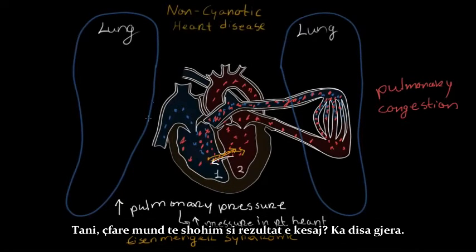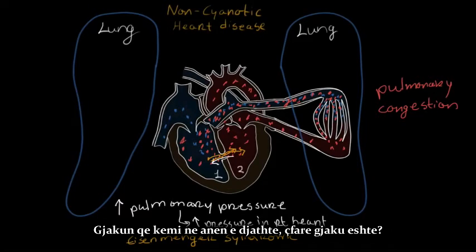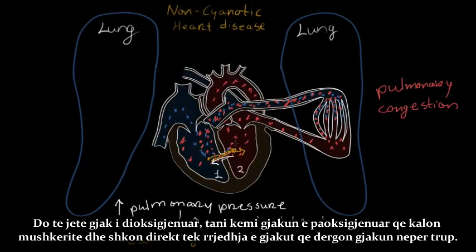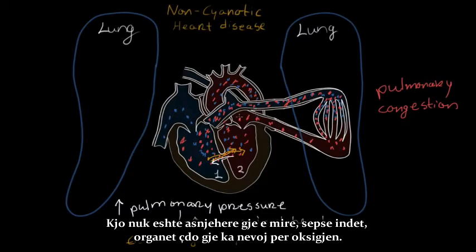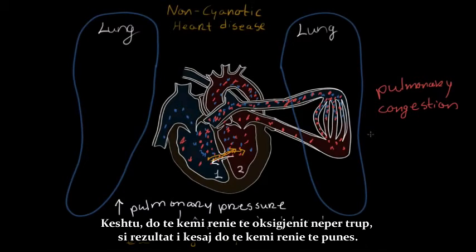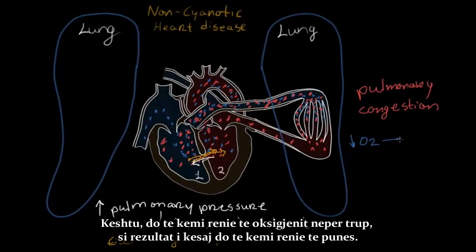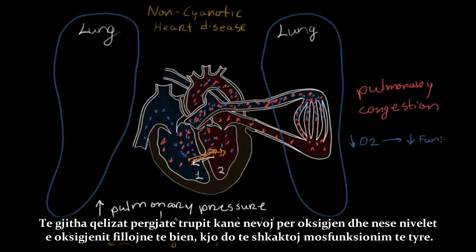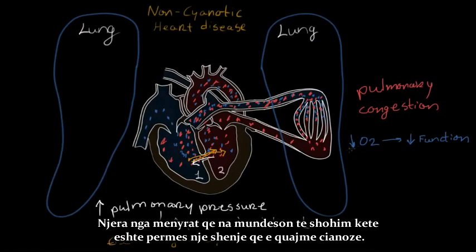Now, what are we gonna see as a result of that? Well, there are a few things. The blood that we have on the right side is going to be deoxygenated blood. So now we're gonna have deoxygenated blood bypassing the lungs and getting into the bloodstream that's going throughout the body. That's never a good thing because the tissues, the organs — everything needs oxygen. So we're gonna have a decrease in oxygen throughout the body, and as a result of that, we're gonna get a decrease in function. All of the cells throughout the body need oxygen, and if the oxygen levels start decreasing, that is gonna cause them to not function as well as they should.